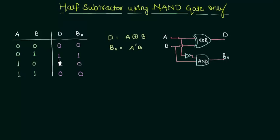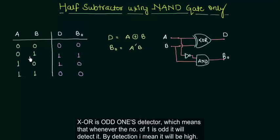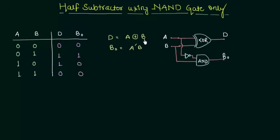And you can see that the difference is an odd 1's detector. Whenever there is odd 1 on the left hand side the D is high, which means that it is an XOR operation. So D is equal to A XOR B.